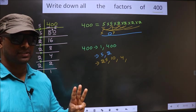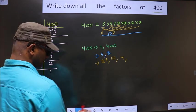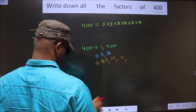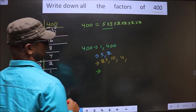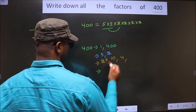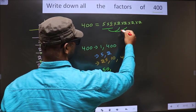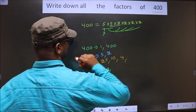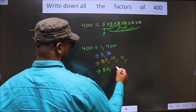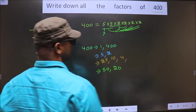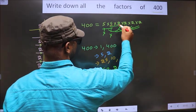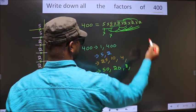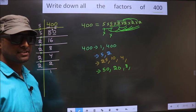Now take combinations of 3 numbers. Fix 5 and 5, that is 25, combined with 2 gives 50. Now leave one 5; take 5 and 2: 5 × 2 is 10, combined with 2 gives 20. Leave both 5s; take 2 × 2 is 4, combined with 2 gives 8. No more combinations possible.